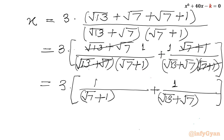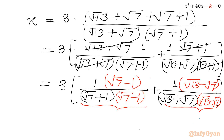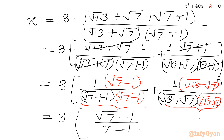Now I can rationalize my denominator. So I need to multiply for the first term: root 7 minus 1 in the numerator and denominator. Similarly, root 13 minus root 7 I will multiply in the numerator and denominator for the second term. Now the denominator is (a plus b)(a minus b). So I can write: denominator will be 7 minus 1 and 13 minus 7. So I can write here: 3 times in bracket — root 7 minus 1 over 7 minus 1, plus root 13 minus root 7 over 13 minus 7.